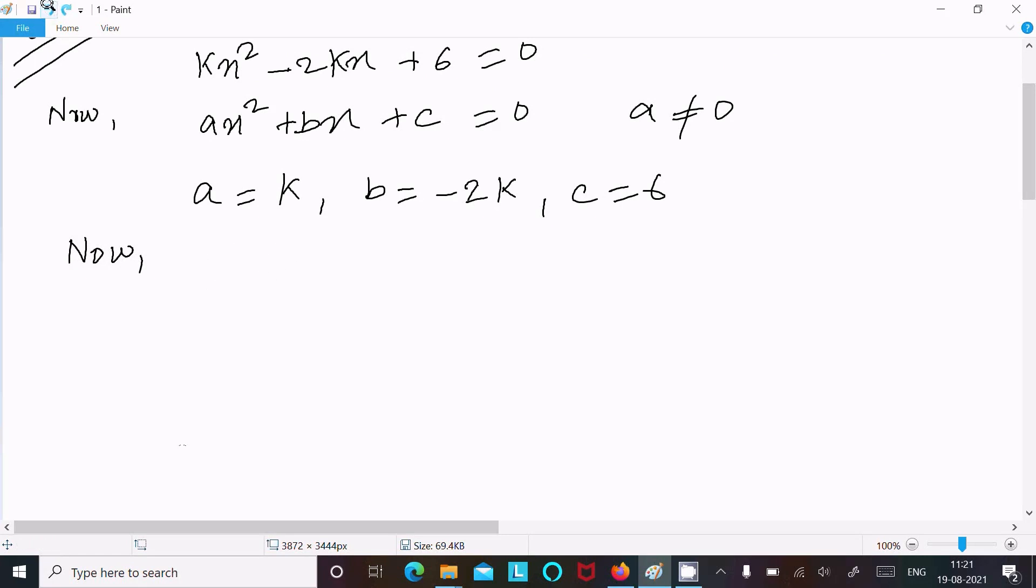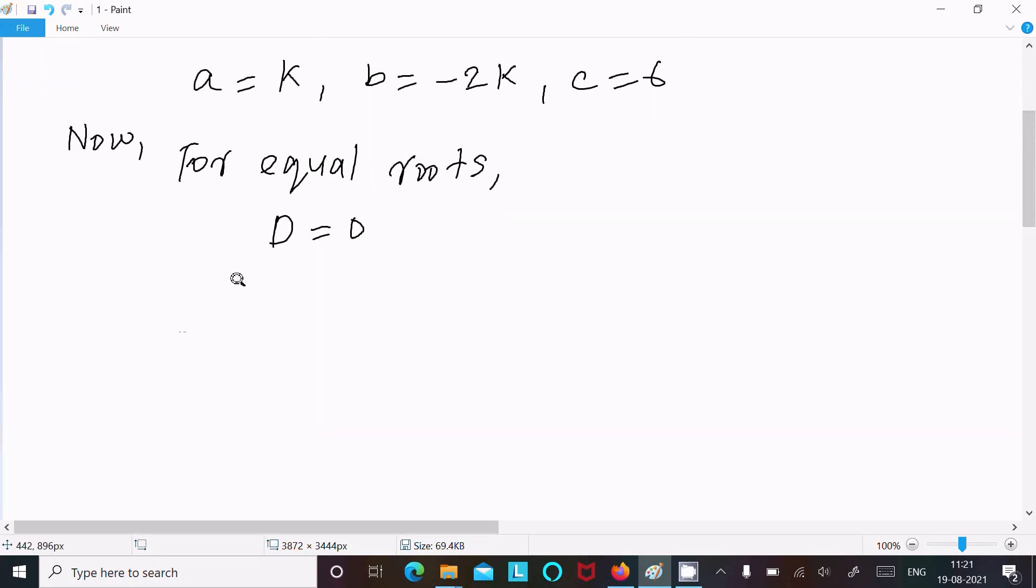For equal roots, the discriminant D = 0. The discriminant formula is b² - 4ac = 0.